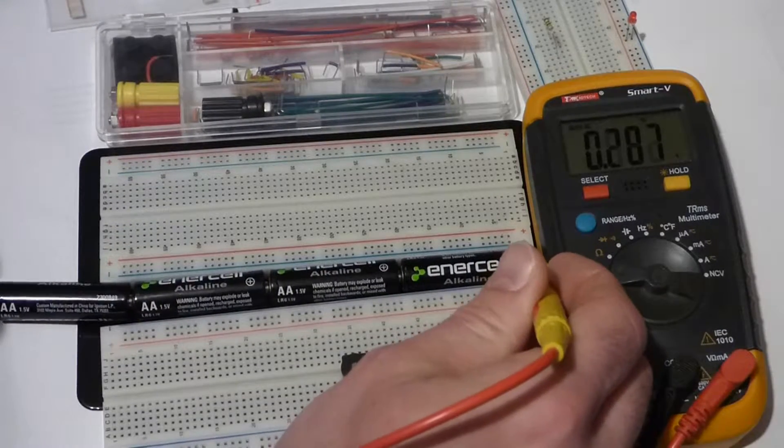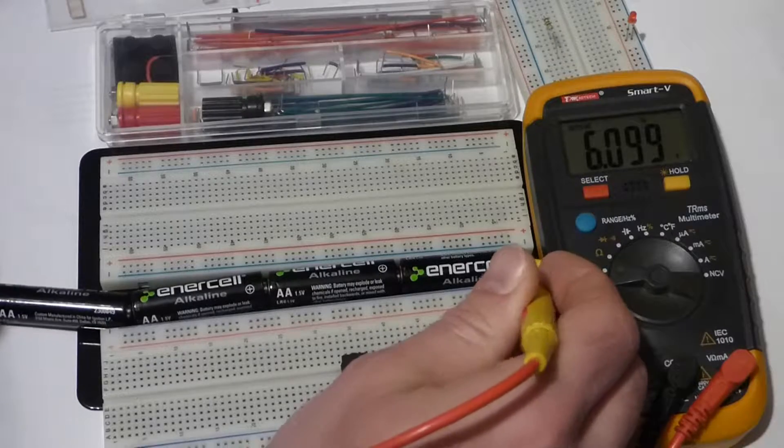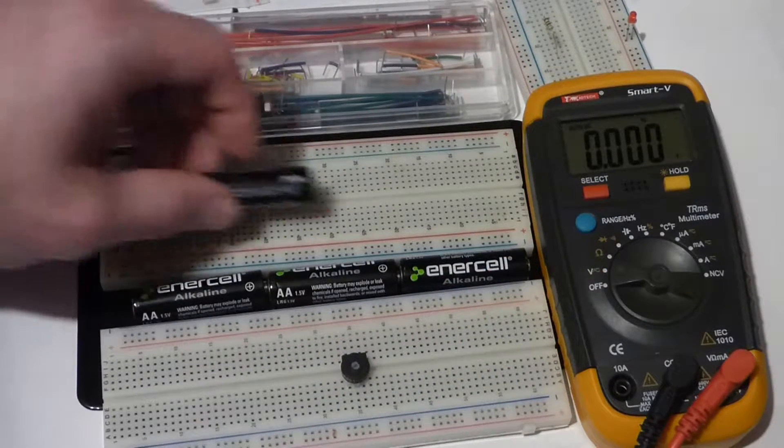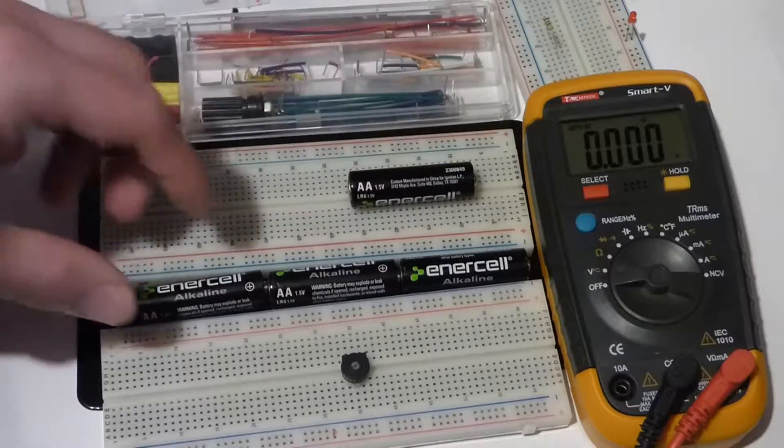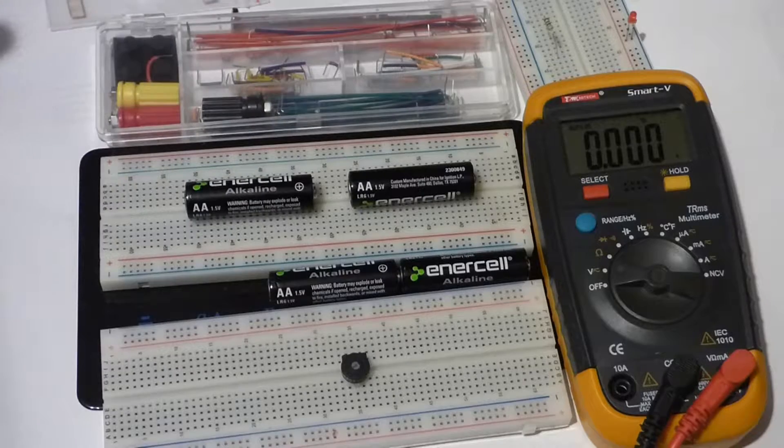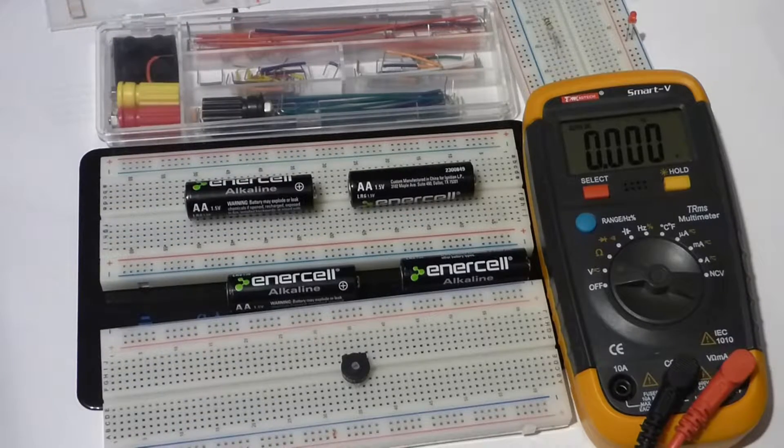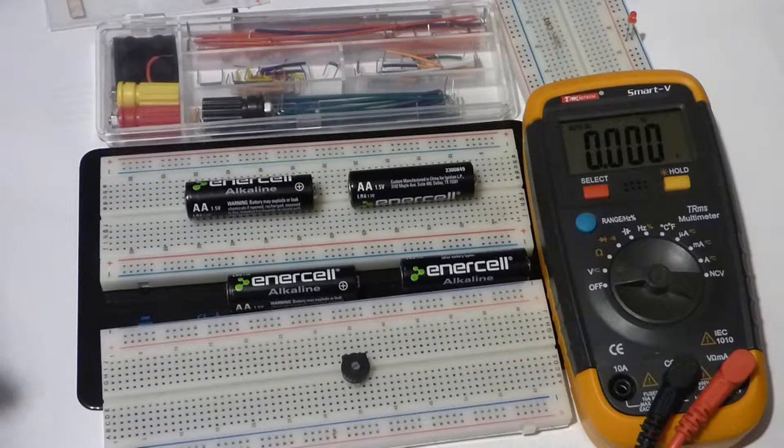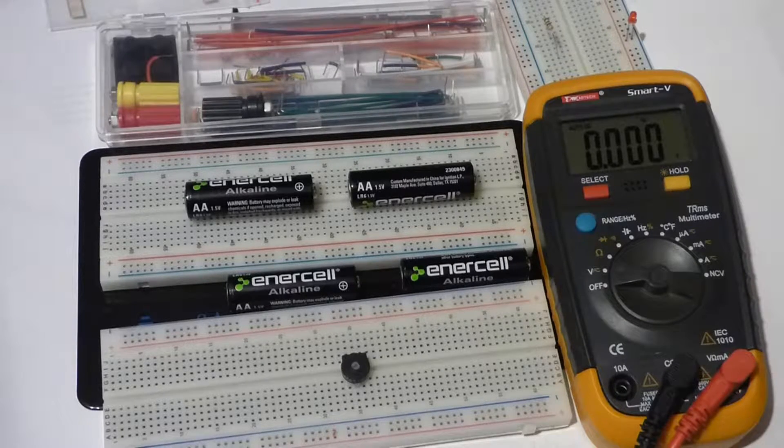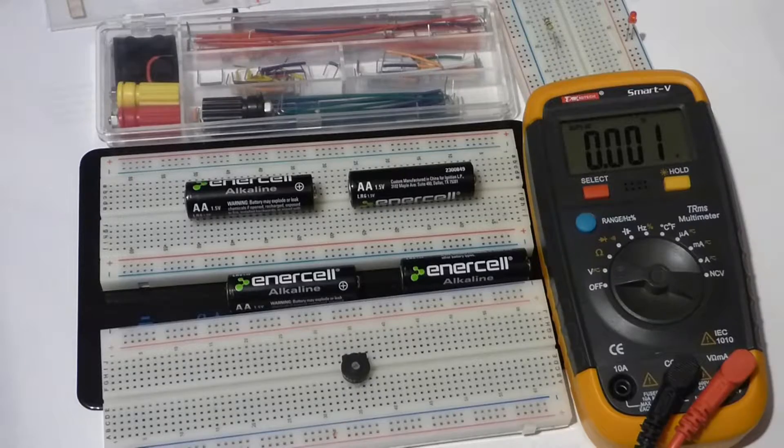But now remember, the batteries really can't handle more current when you put more of them in series. The current still has to flow through the same battery, so you don't want to go overboard putting batteries in series trying to get a really high voltage, because a high current will still be dangerous.